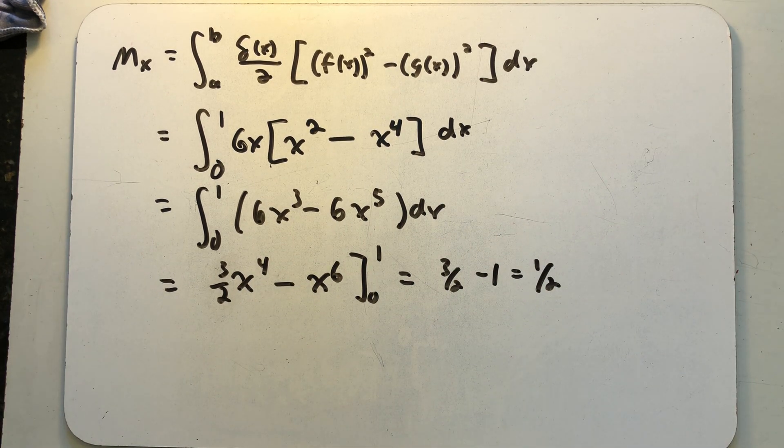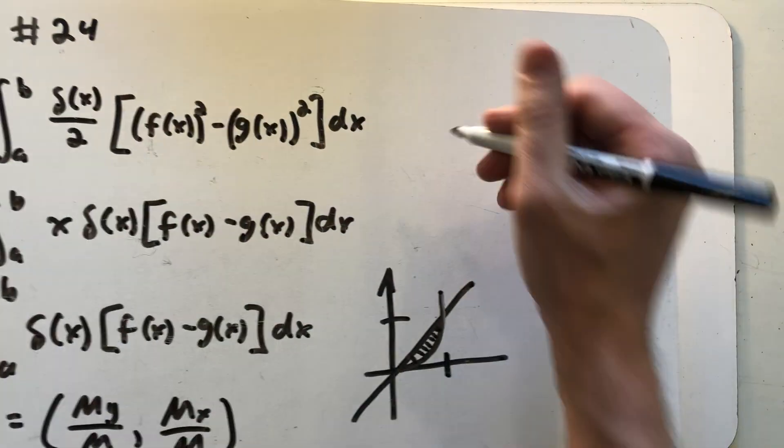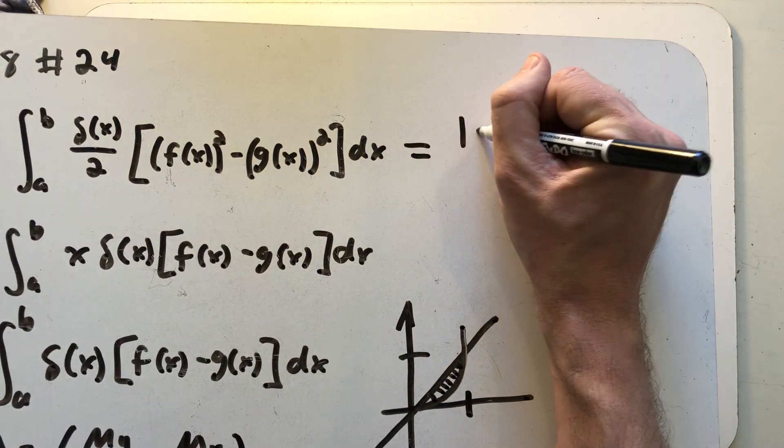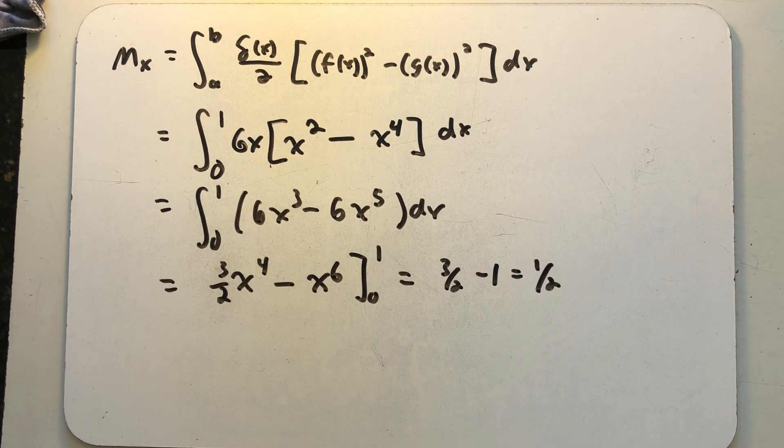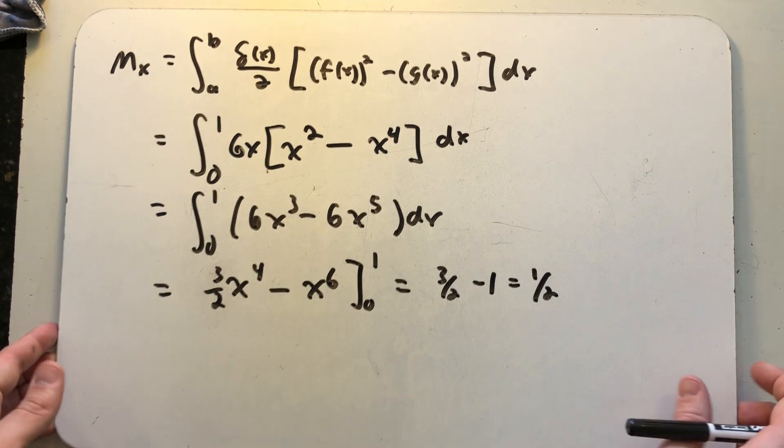The moment about the x-axis is one half. So I'm going to make a note that we've done that one and we just got one half. Now we need to find the moment about the y-axis.